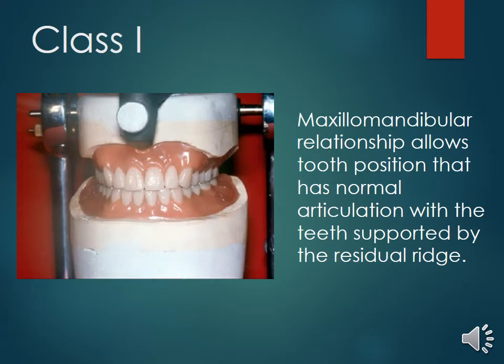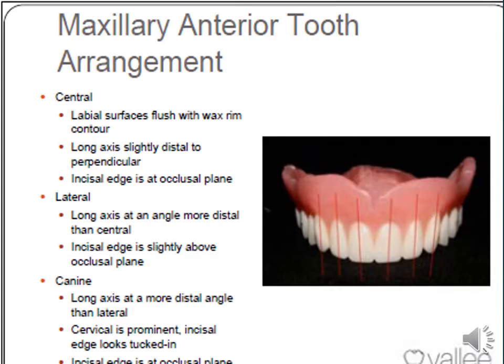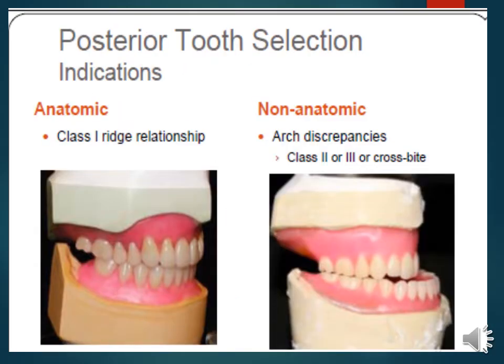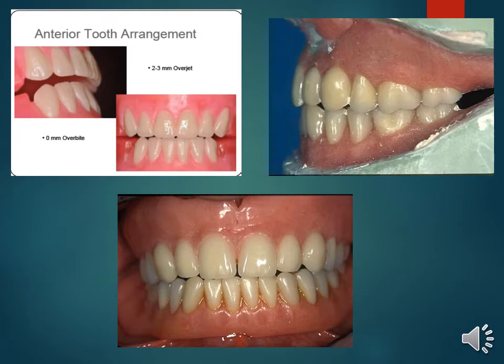In class 1, the ridge-to-tooth relationship allows tooth position with normal articulation, supported by the residual ridge. The maxillary anterior teeth are arranged with their long axes in relation to the adjacent teeth. Anatomical teeth can be used in a class 1 ridge relationship, while for class 2 and 3, non-anatomical teeth are preferable.